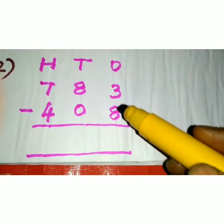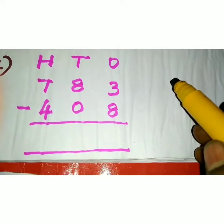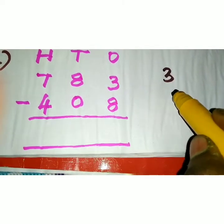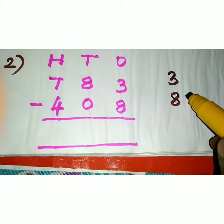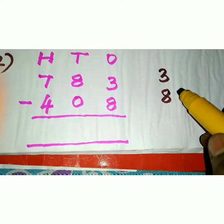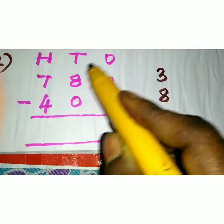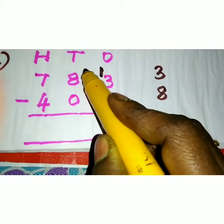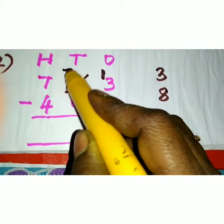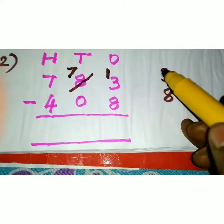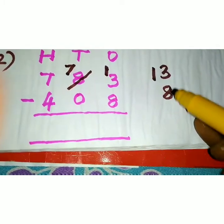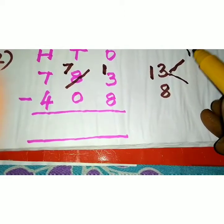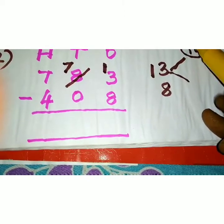Consider the next sum: 783 minus 408. Here in the ones place, more on top or more on the floor? More on the floor — below 3, the number 8 is there. 8 is a bigger number. So you have to make 3 bigger than 8 by sharing from the tens place. Share 1 ten to the ones place: 3 becomes 13 and 8 tens become 7 tens. In the number bond method, always take the whole value as 10, so separate 13 as 10 and 3.